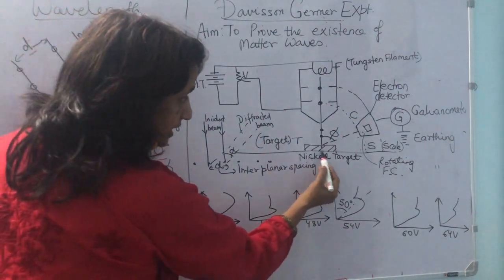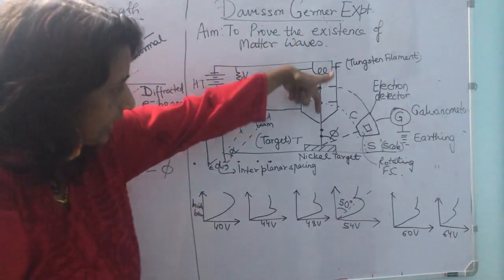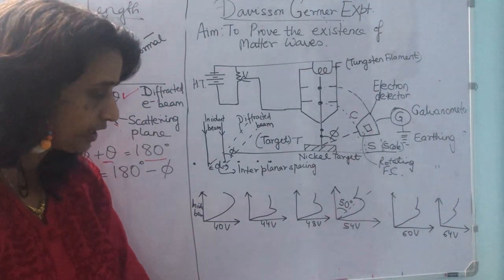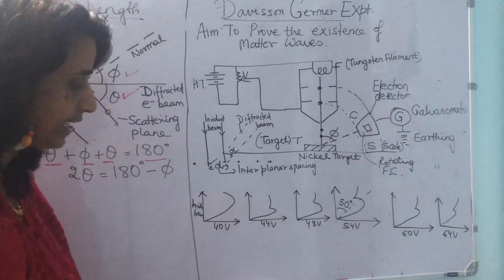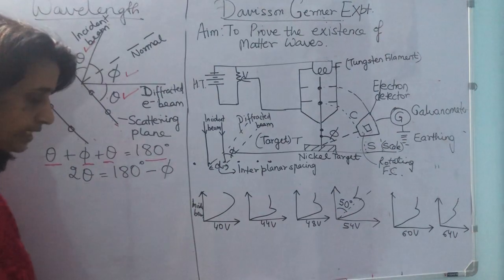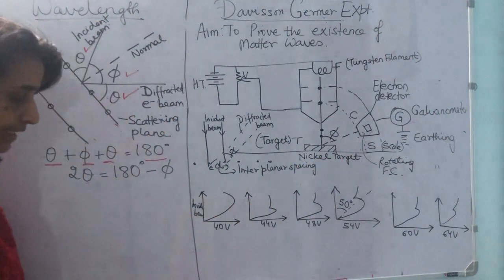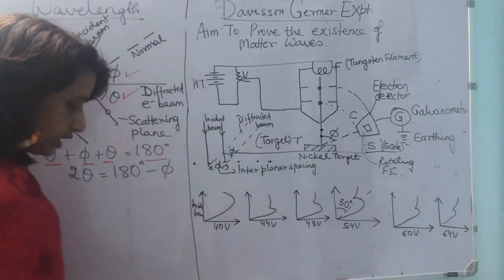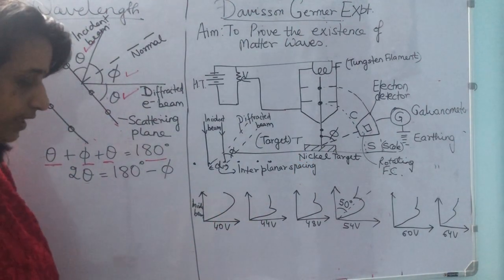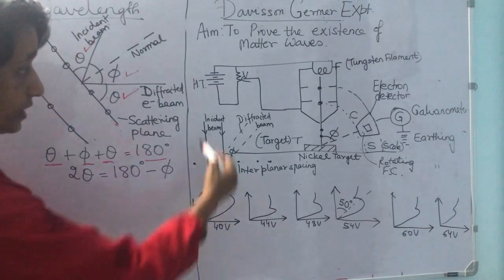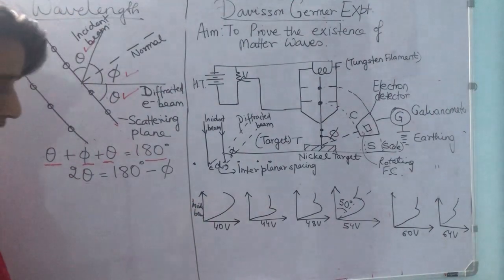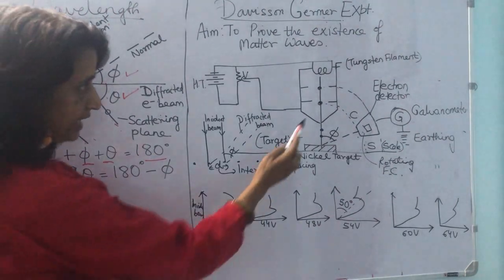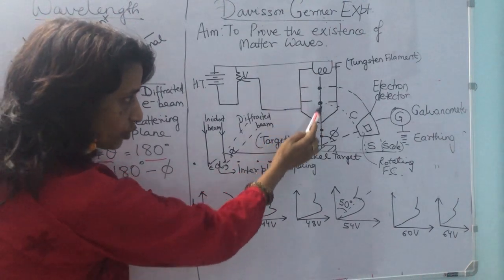The best point about this target is that we can rotate it at different azimuthal angles for different voltages, which helps us in taking more readings. The electrons scattered from the target are collected on the Faraday cylinder. The crystal can be rotated about an axis perpendicular to the incident beam so that various values of azimuthal angle can be obtained. This whole setup is kept in a highly evacuated apparatus.